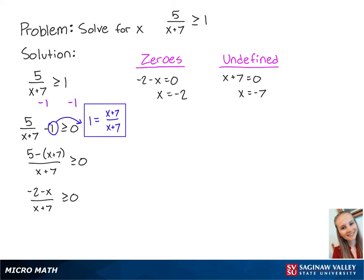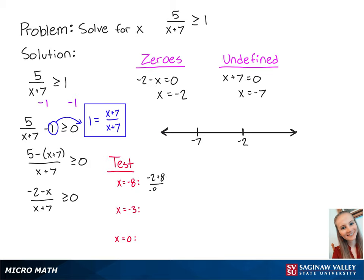Now we're going to use this number line to find the values of x that make the inequality a true statement. We're going to do this by plugging in values of x from each region. For x equals negative 8, we have negative 2 plus 8 over negative 8 plus 7, which is equal to negative 6.